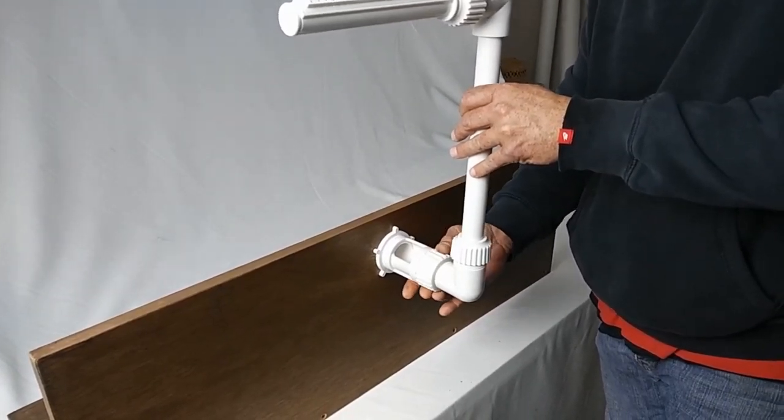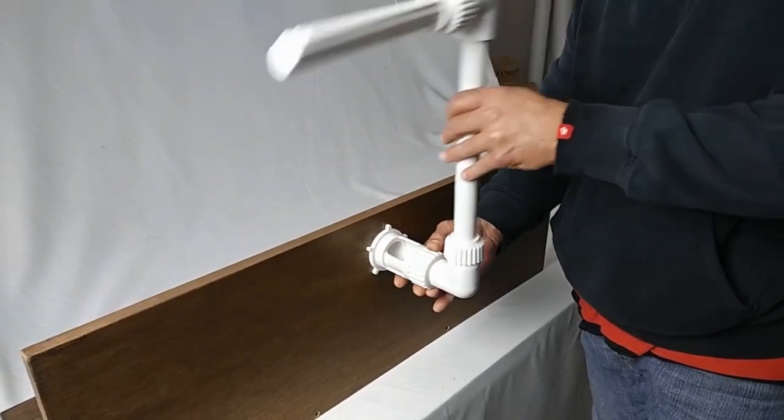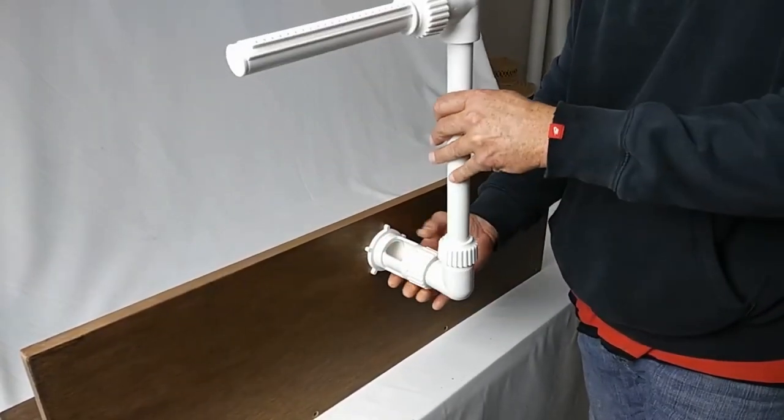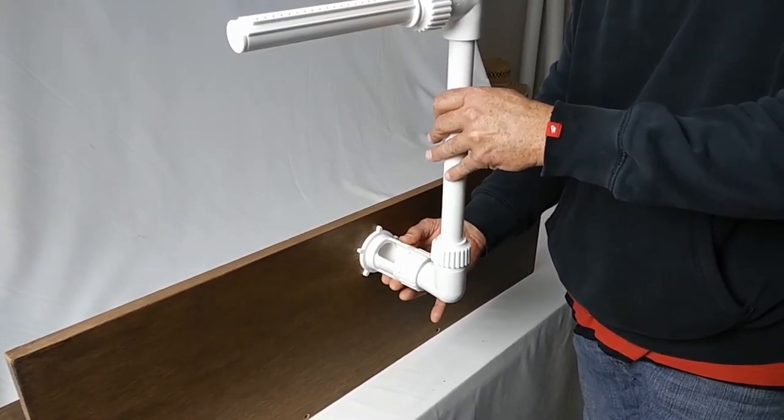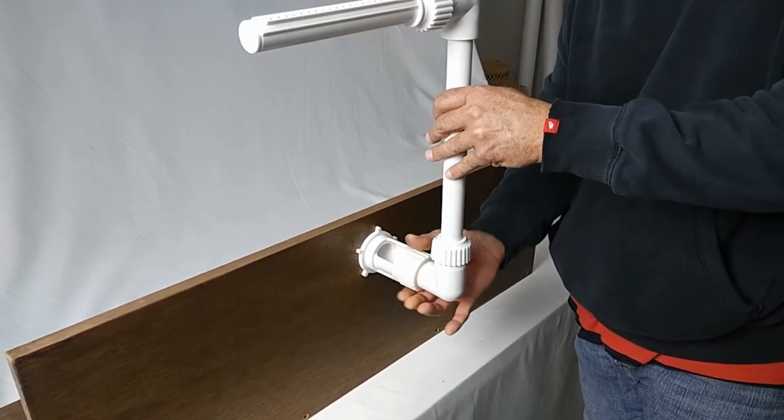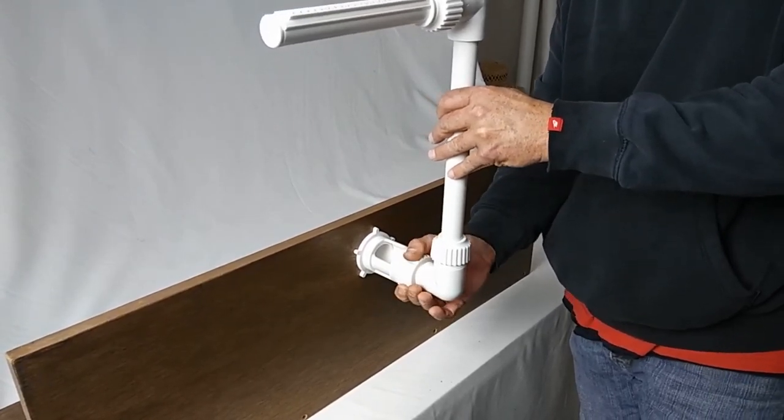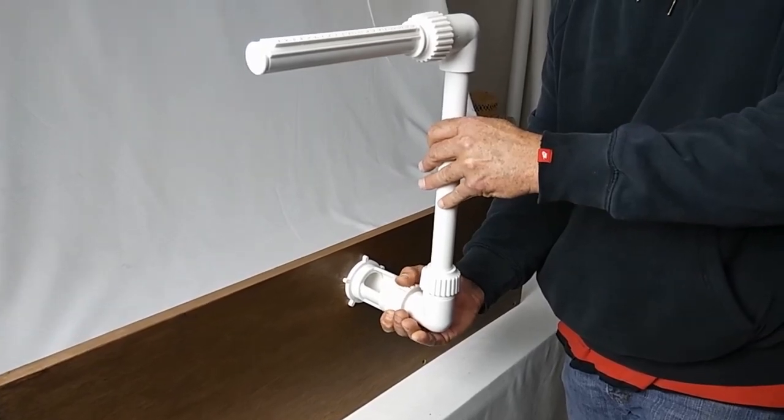Please note that when you do loosen this coupler it will free up the riser to move back and forth. So once we have adjusted our valve to the desired position that we want for our spray, we're going to then again hand tighten the coupler back, making sure that our riser is back in the original position we wanted it in.